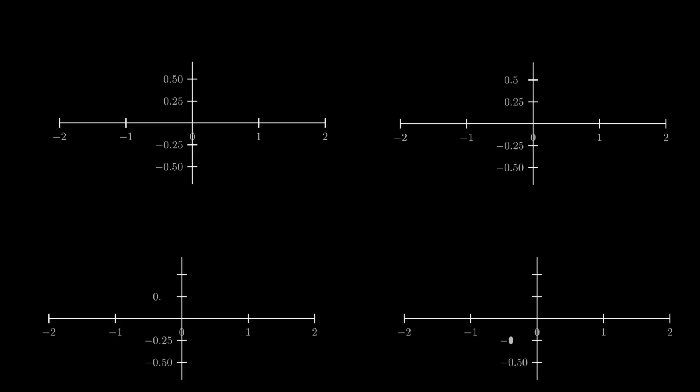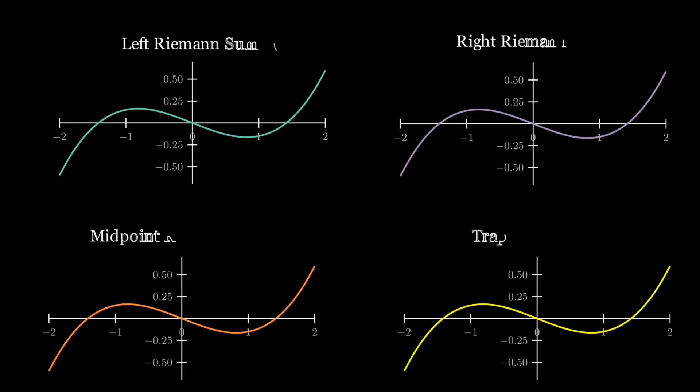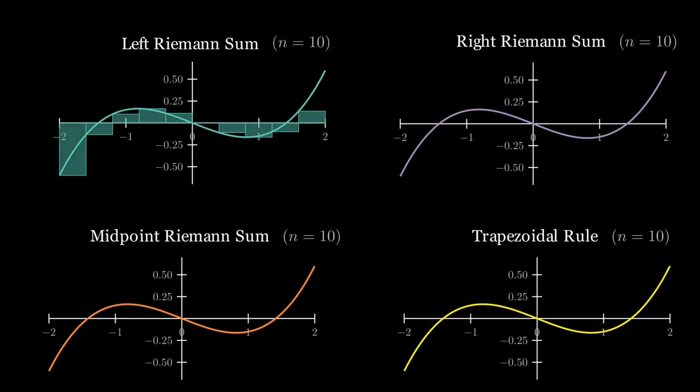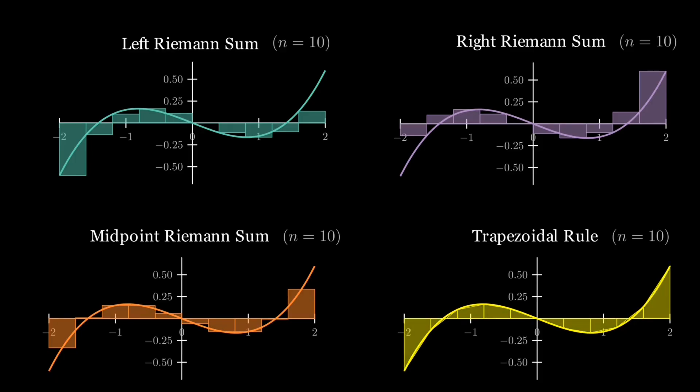Now note that there are different kinds of Riemann sums and not all of them are the same. If we sample at the left endpoint of each interval, we get the left Riemann sum; the right interval, the right sum; and at the midpoint, a generally better estimate.